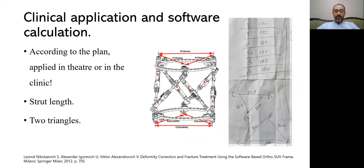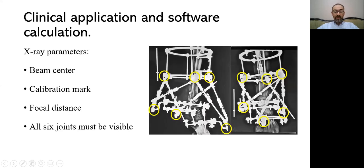You can apply this according to the plan — either in theater if you decided in advance, or in the clinic if you change your mind during the treatment plan. This is a big advantage: you don't have to be in theater to apply it. If a patient has a standard Ilizarov and something goes wrong requiring correction, just put in these struts, remove the connections of the Ilizarov, and start. You need the strut lengths — numbers one through six — and the distances between these points: you have an upper triangle and a lower triangle, and these are the measurements you need.